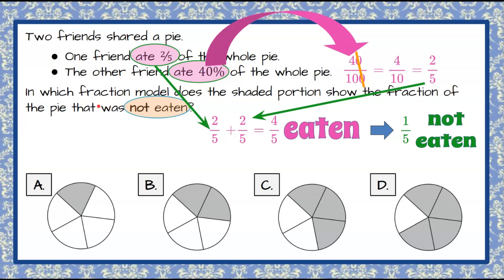Now going back to our question, which fraction model does the shaded portion show the pie that was not eaten. So now we're looking for one piece of pie to be shaded in because that's all that was left when the two friends stopped eating, and that is choice A.